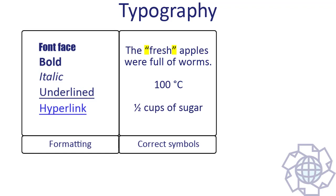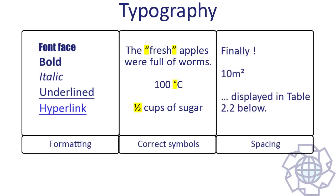Typography also includes the choice of correct symbols to represent written text. Another very important aspect is the spacing around words. When we edit or translate texts, the formatting of a document is already defined by the author and we do not have much control over it. However, it is in our control to make sure that the document uses proper symbols and correct spacing.